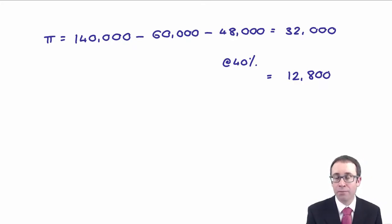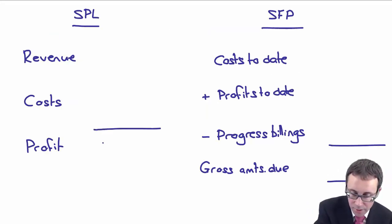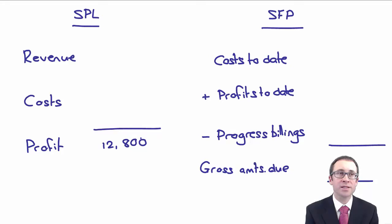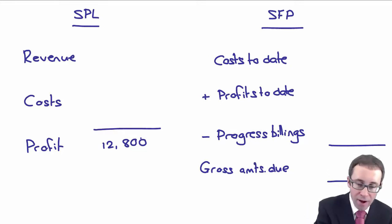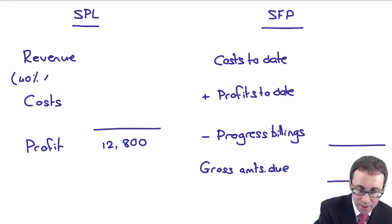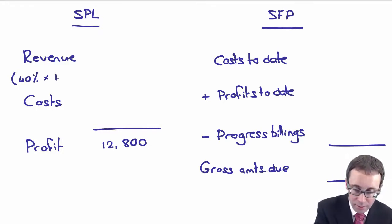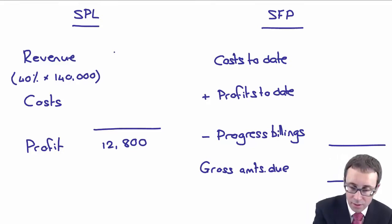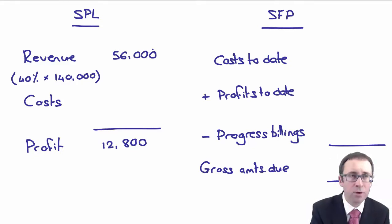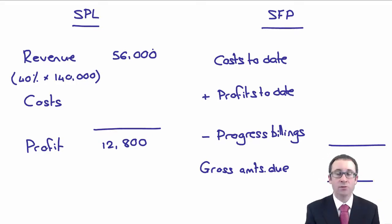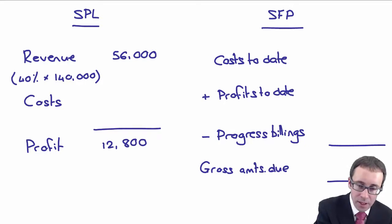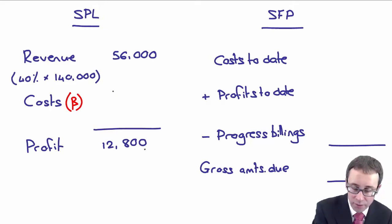So in the statement of profit or loss, profit is based on 12,800 based upon your profitability. Revenue is based upon percentage complete — 40% of the total revenue of 140,000 is 56,000. And I can put the costs in as a balancing figure. The costs recognised in profit or loss are 43,200.